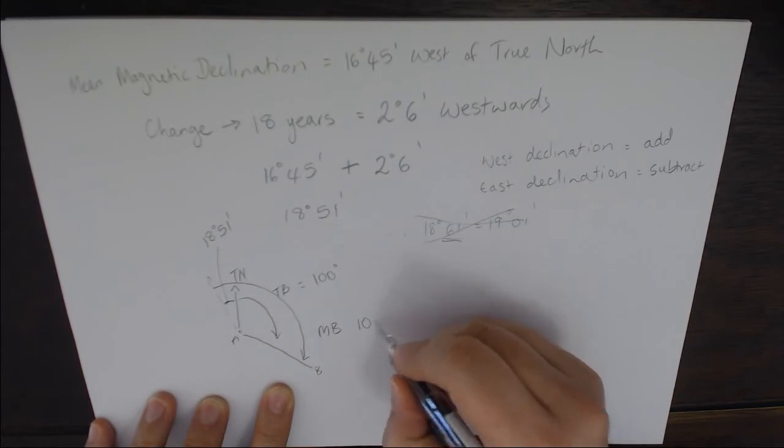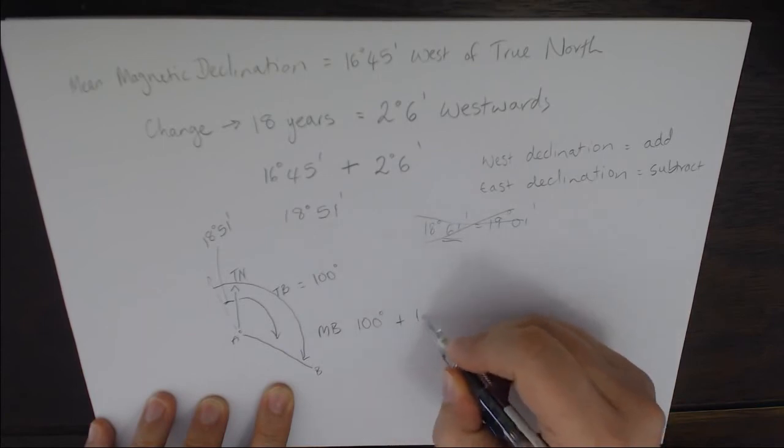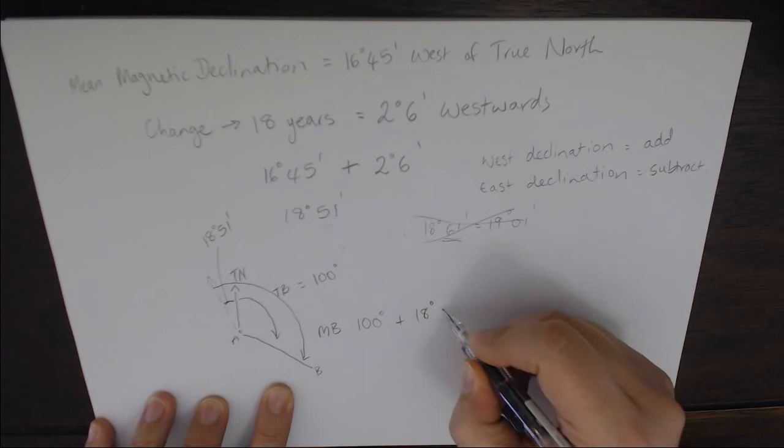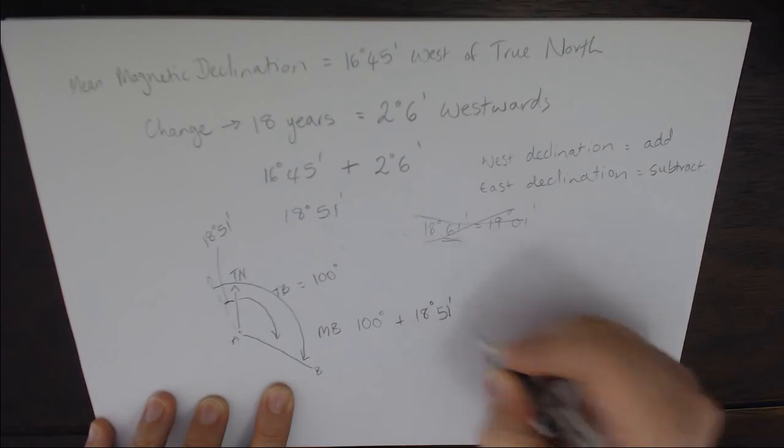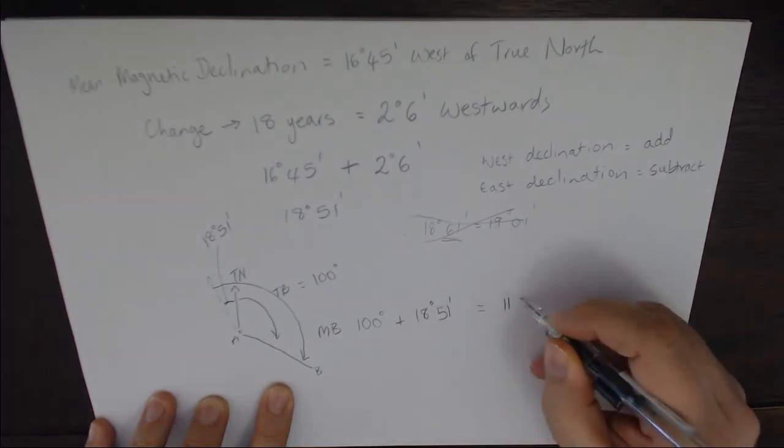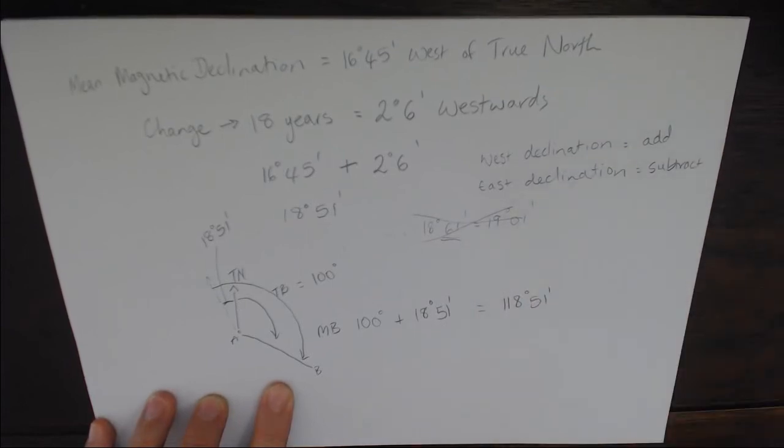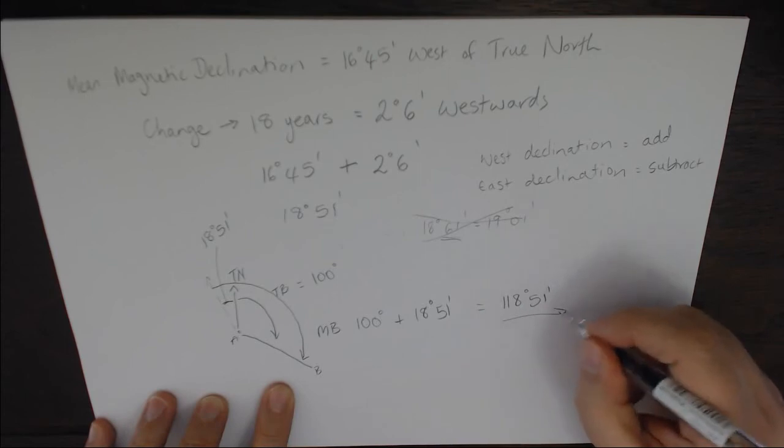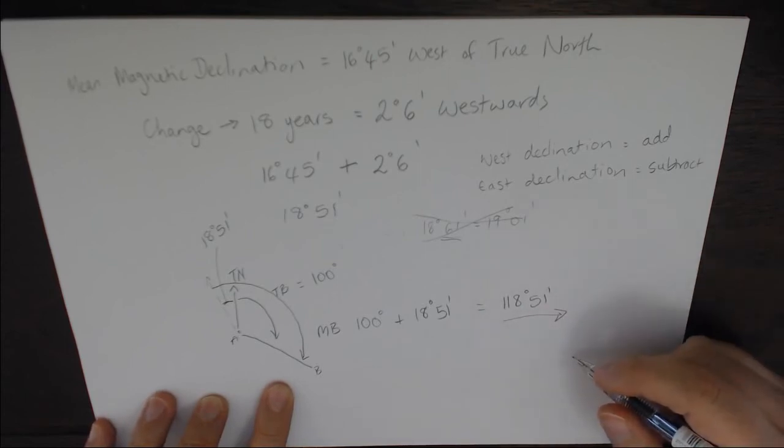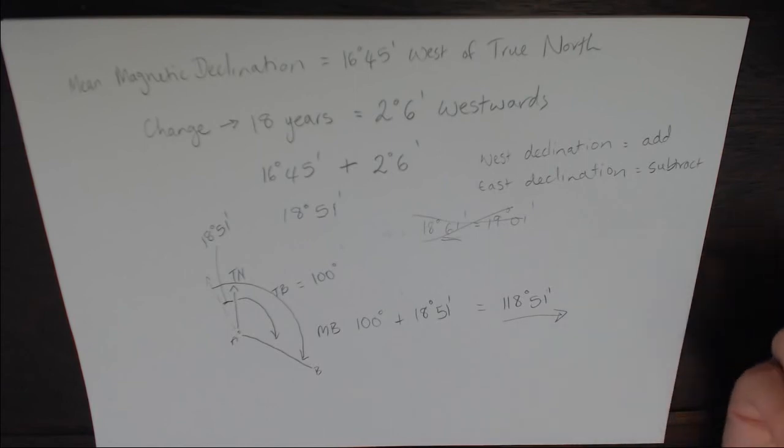So if we were to go from that magnetic north to our AB line, our magnetic bearing is going to be comprised of our true bearing 100 degrees plus our current magnetic declination, which will give us 118 degrees and 51 minutes. We don't put a west or an east in here because this is now a bearing calculation which doesn't involve a cardinal point.